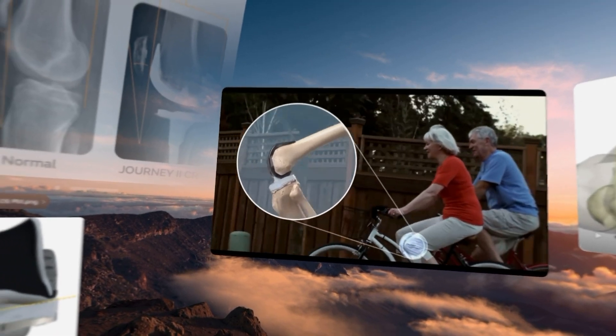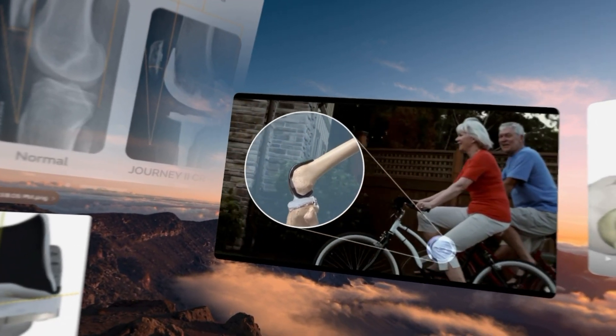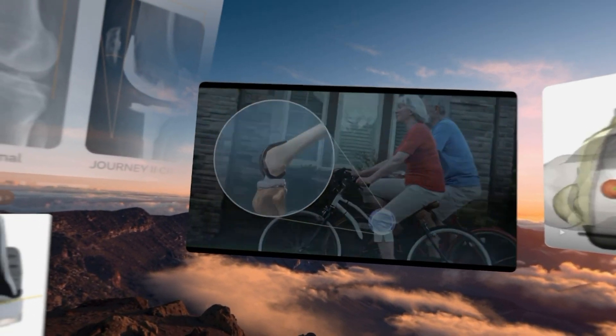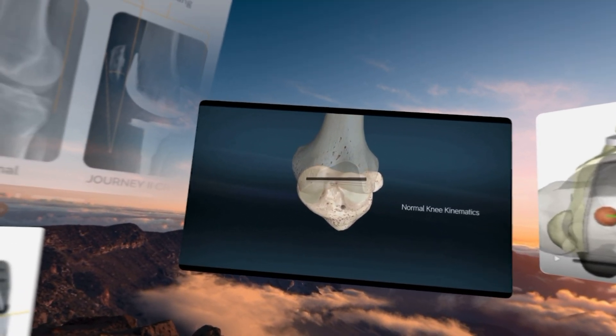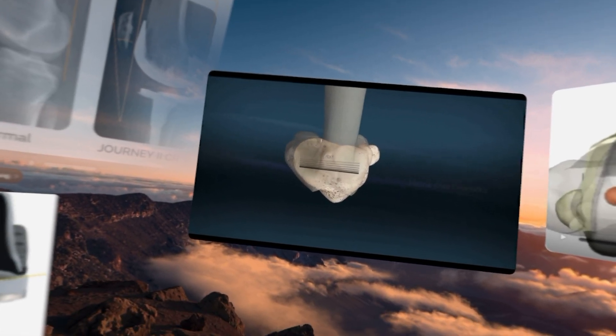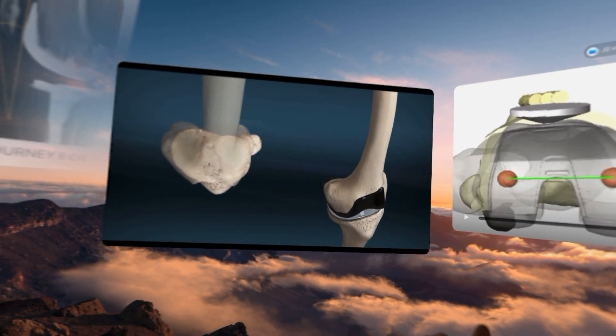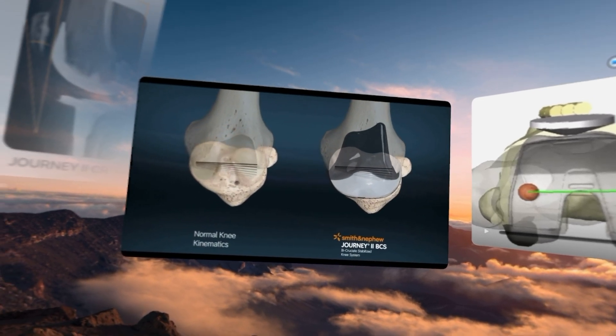So this is a guy hitting a golf ball and you can see the knee slightly twist and glide. This is a lady riding a bike. Similar idea. When the knee is in motion, it doesn't just bend and straighten. You have to have this motion. And so this is going to highlight that medial pivot of a natural knee.